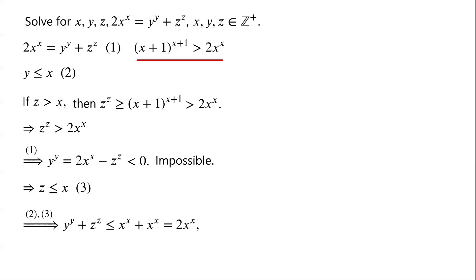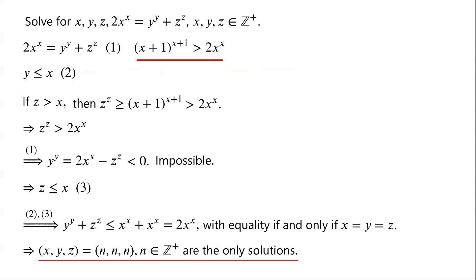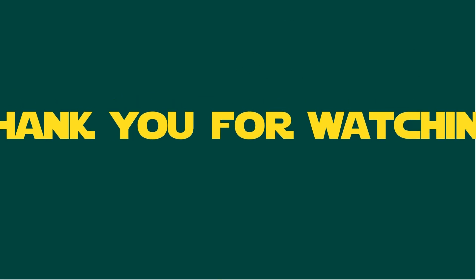From inequalities 2 and 3, we have y to the power of y plus z to the power of z is less than or equal to x to the power of x plus x to the power of x, which equals 2 times x to the power of x. Note that the equality holds if and only if x equals y equals z. Equation 1 requires the equality to hold, so x must equal y must equal z. Therefore, x equals y equals z equals n, where n is a positive integer, are the only solutions. To be continued. Thank you.